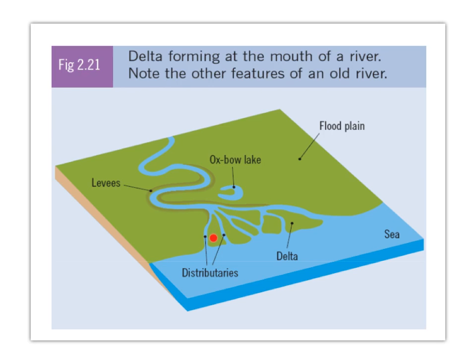As the river reaches its mouth, it has no energy left to carry its load. It deposits the remaining material it's carrying, and this builds up to form new land. The river is then forced to break up into smaller distributaries. These are not tributaries — they don't join the main river; they break off from it, and these channels are called distributaries.